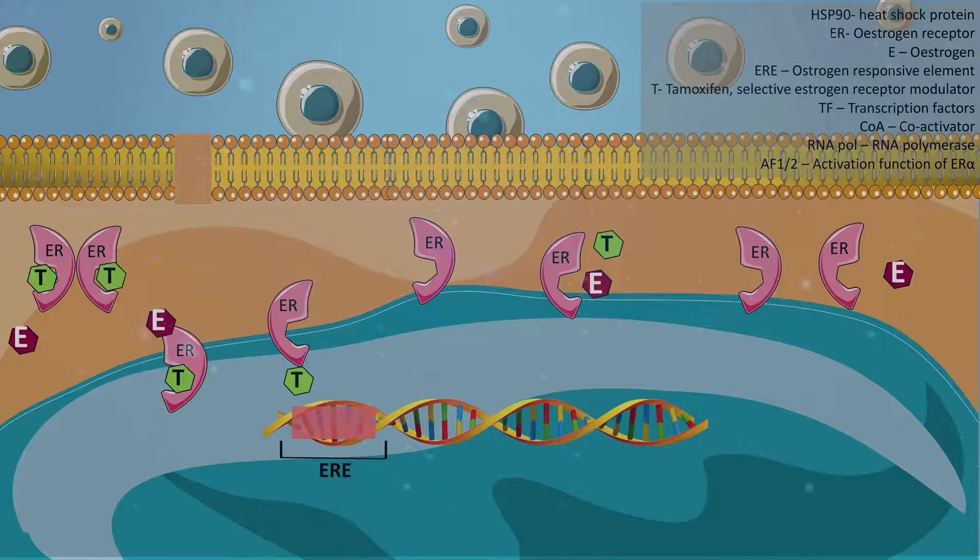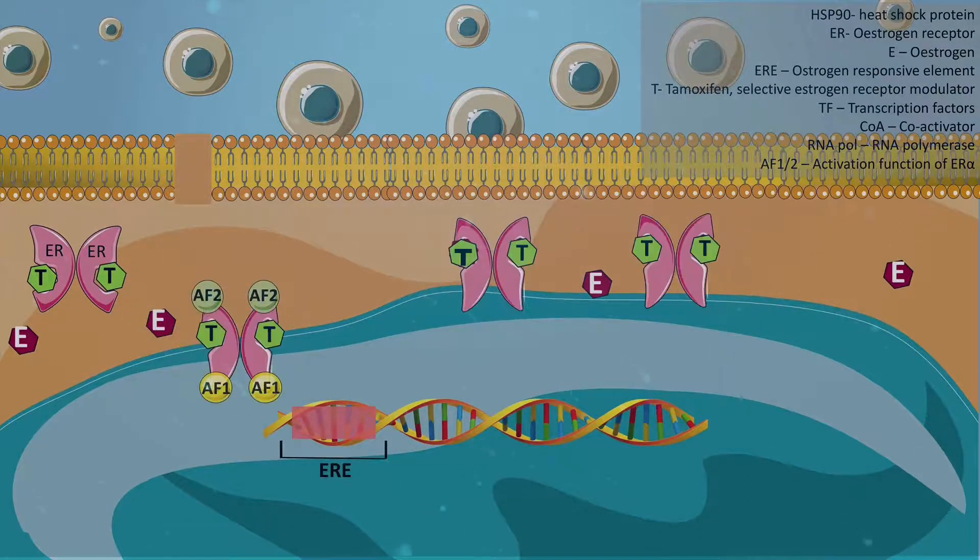Once bound, the HSPs dissociate, thus allowing dimerization of the ER.